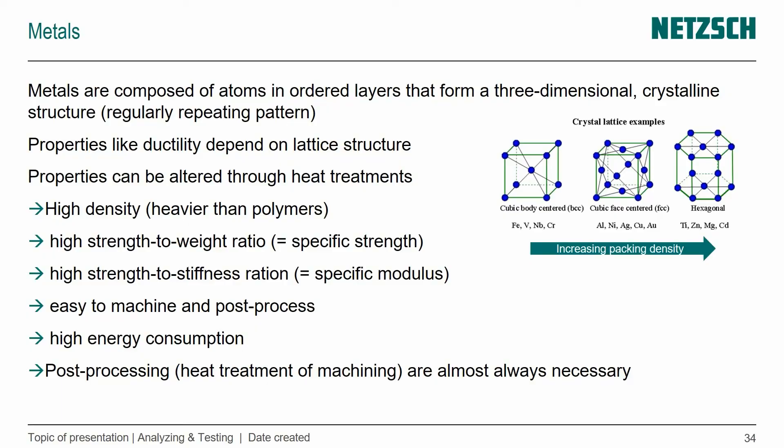The lattice structure can be altered through heat treatments done after the metal part was produced. That's traditionally done in metal works, but it's also something done with additively manufactured metal parts. Metals, in comparison to polymers, are much heavier — they have a higher density — but they have a very high strength-to-weight ratio, a specific strength.